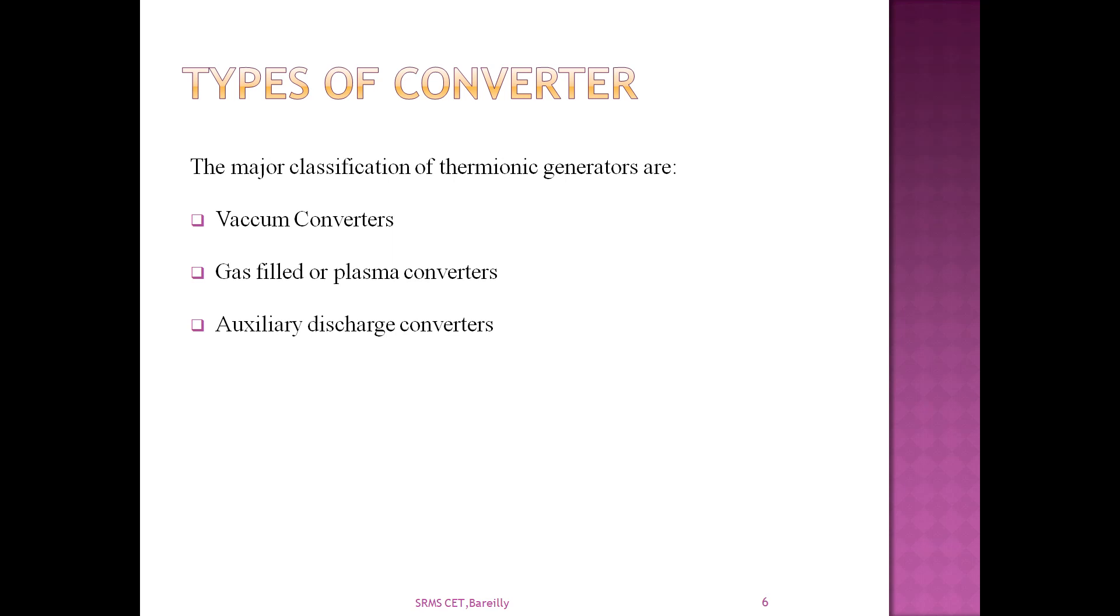Next, gas filled or plasma converters. They are designed so that positively charged ions are continuously generated and mixed with negatively charged electrons in the space between the emitter and collector to provide a plasma with a relatively neutral space charge. Because of this, a liberated electron encounters little electrostatic resistance force in passing from the emitter to the collector. We may use alkali metal to produce readily ionizable vapor. Cesium can be used as it has low ionization potential. Potassium and rubidium may also be used. The vapor pressure is normally of the order of 100 Pascals. So this makes gas filled or plasma converters useful.